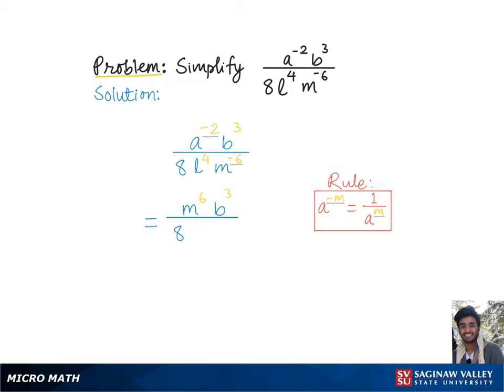divided by 8 times a to the positive square times l to the 4th. This is the final answer as all of our exponents are positive now.